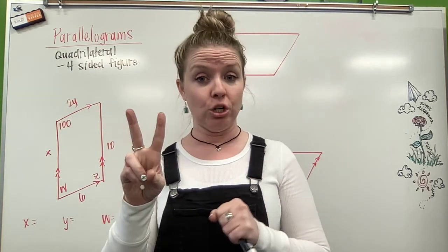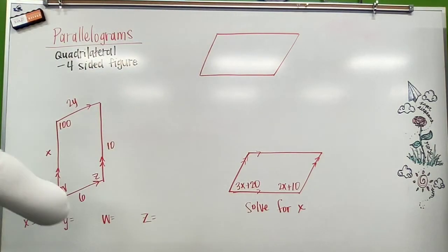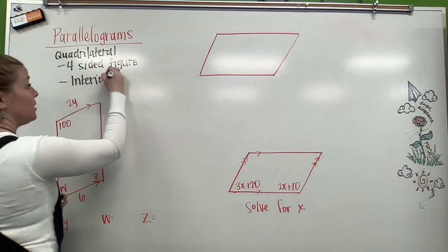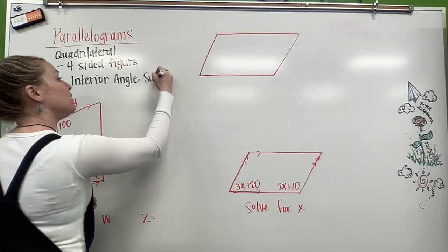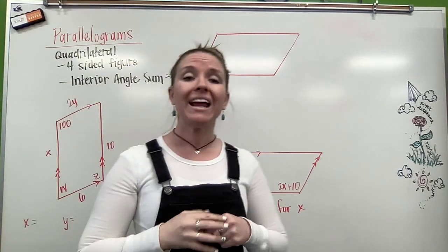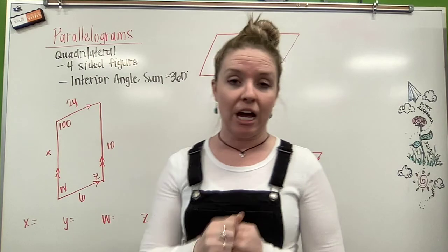So quadrilaterals are just two triangles put together, so their interior angle sum is 360. So the four interior angles of our quadrilaterals are going to equal 360 degrees.